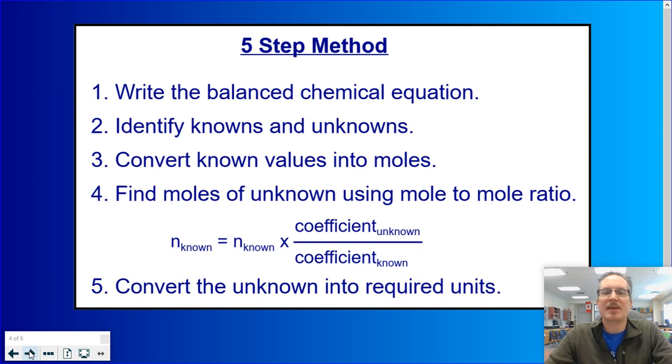We will be following the same five-step method for gas stoic as we did the previous two other types. In step three, we will be using the information we have in order to convert to moles. And in the last step, we will be using the information provided in order to choose a formula to answer the appropriate question.